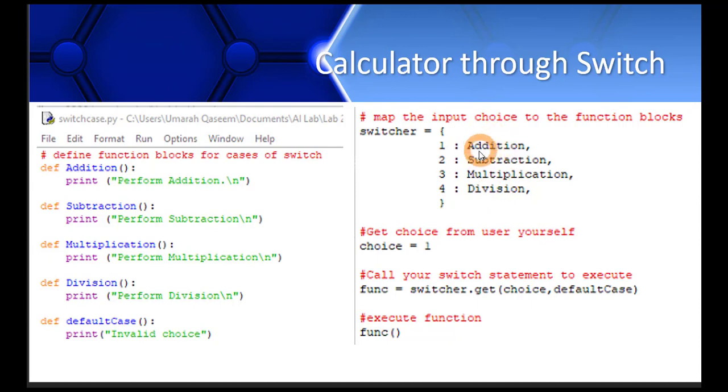This is my dictionary. Now I'm taking a variable choice which equals one right now. You should actually take this choice variable from user. Ignore the rest of the statements for a second and let's look at this piece of code.